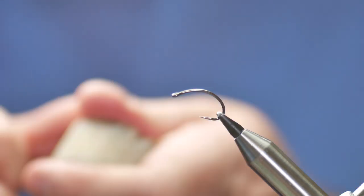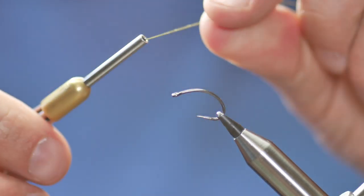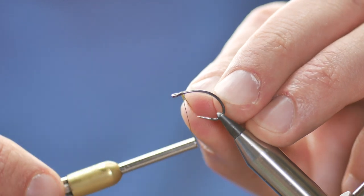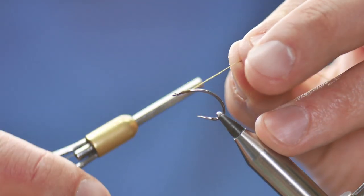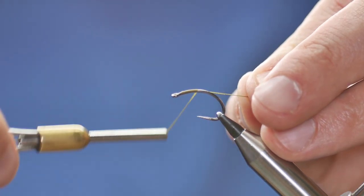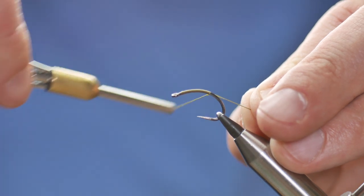First thing I'm going to do is get a little bit of wax onto my thread. I'm going to start in behind the eye, a millimeter or so back, and use my waste end to guide me down the shank of the hook.